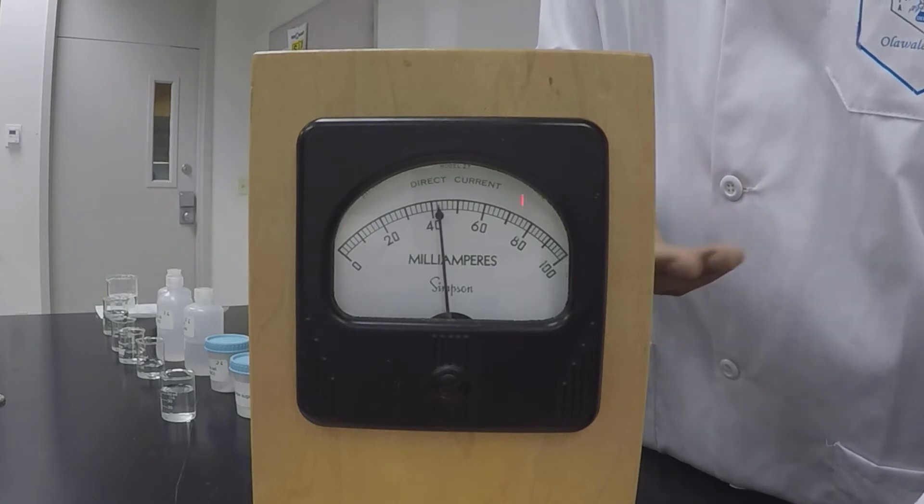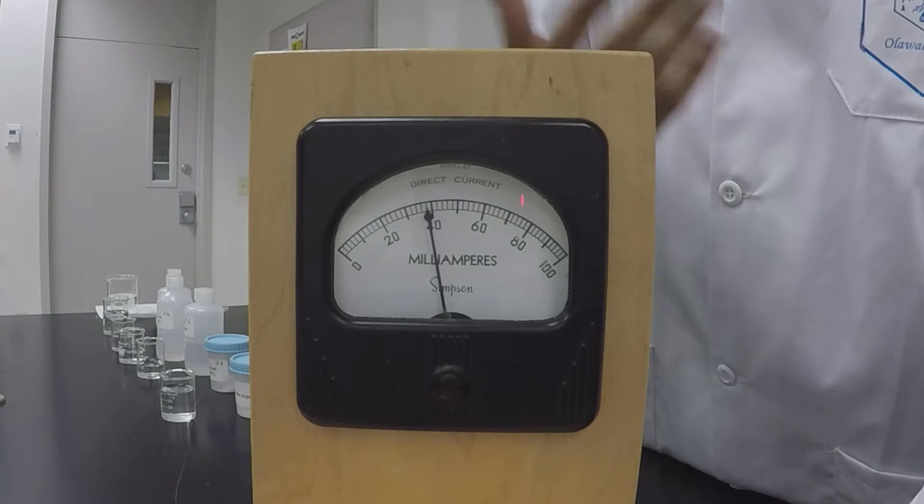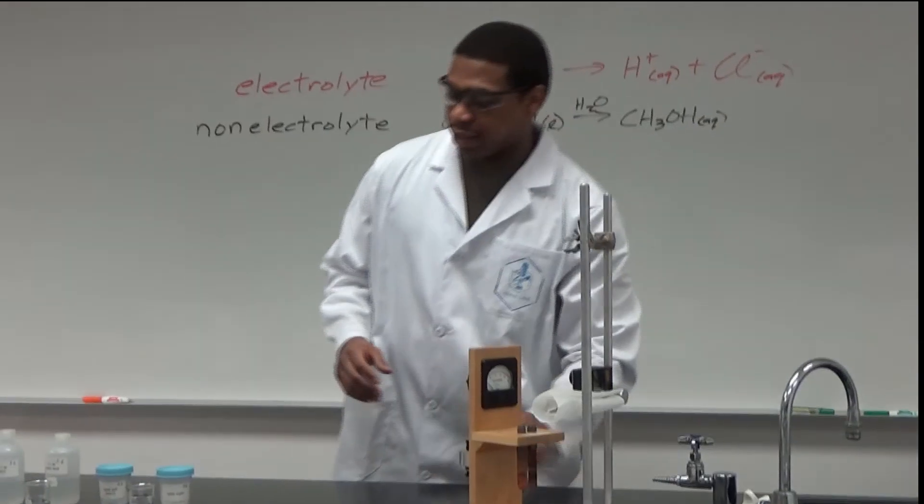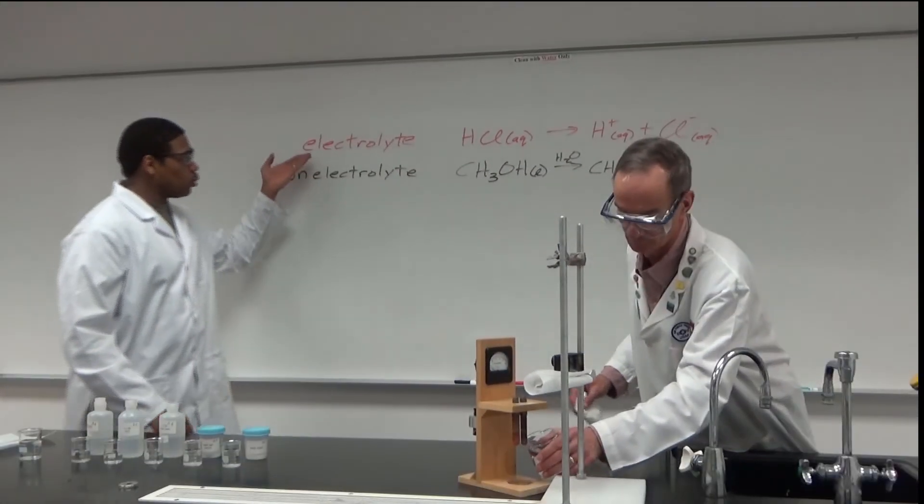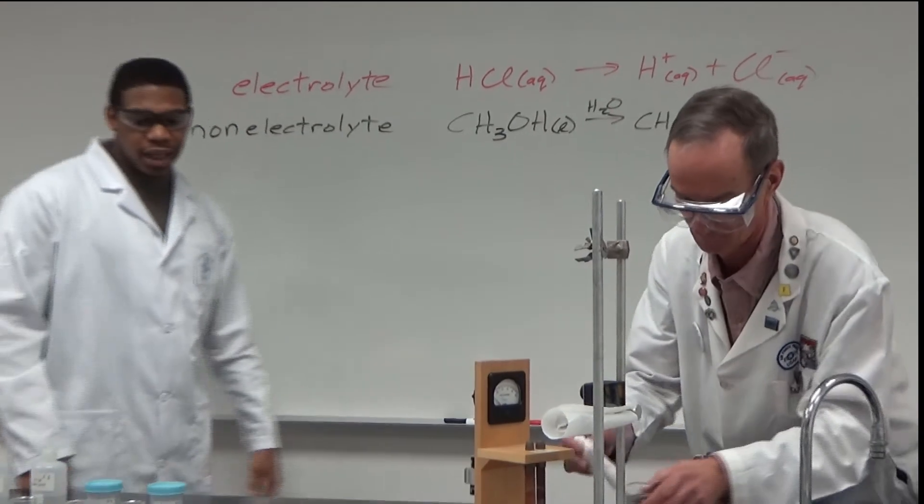As I place this into the meter, you should see the arrow spike up, indicating that this is in fact a conductive solution. Again, conductive solutions we call electrolytes. Non-conductive solutions we call non-electrolytes.